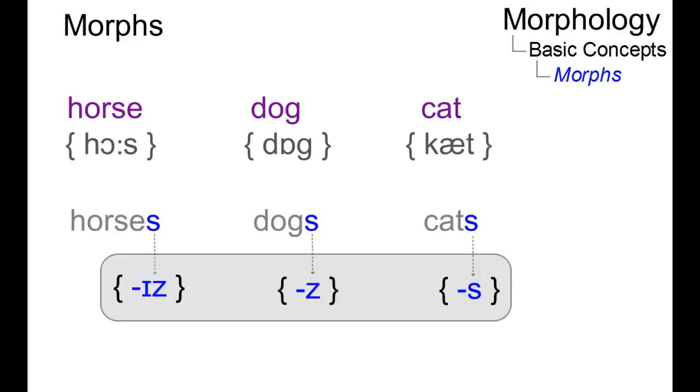Let us now expand the analysis. Here are three nouns with their phonemic representation. Their plural forms involve three different morphs, but they have the same function. They all denote the plural form of a noun.